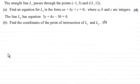Hi there. Now in this question, we're given the straight line L1 passes through the points with coordinates (-1, 3) and (11, 12). In the first part, we've got to find an equation for L1 in the form ax + by + c = 0, where a, b and c are integers.